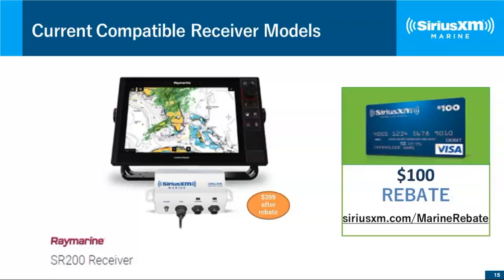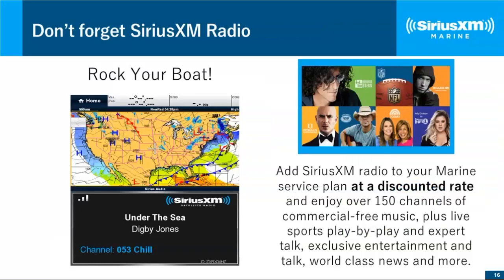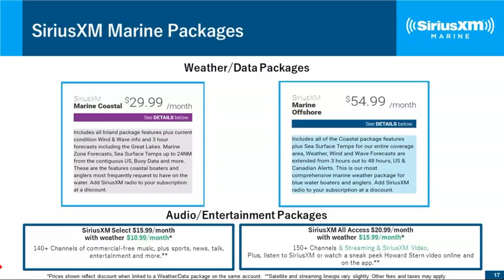Regarding manuals online: SiriusXM doesn't offer a weather manual because the weather looks and is accessed differently on all the different brands of chart plotters. We rely on the plotter manufacturers like Raymarine to produce a manual. Raymarine doesn't have a manual for the SR200 yet, but if you reach out via our contact information, we can get you copies of older manuals since the symbols haven't changed — covering colors, symbols, and reference material.